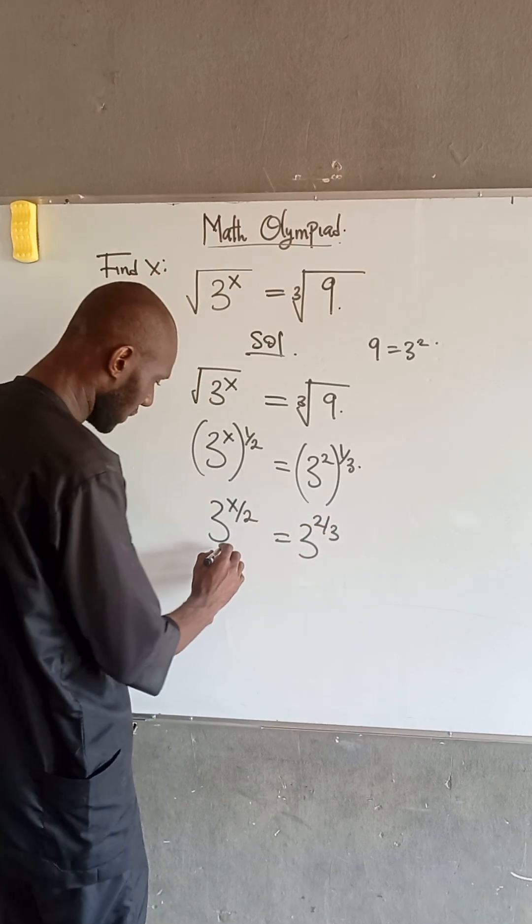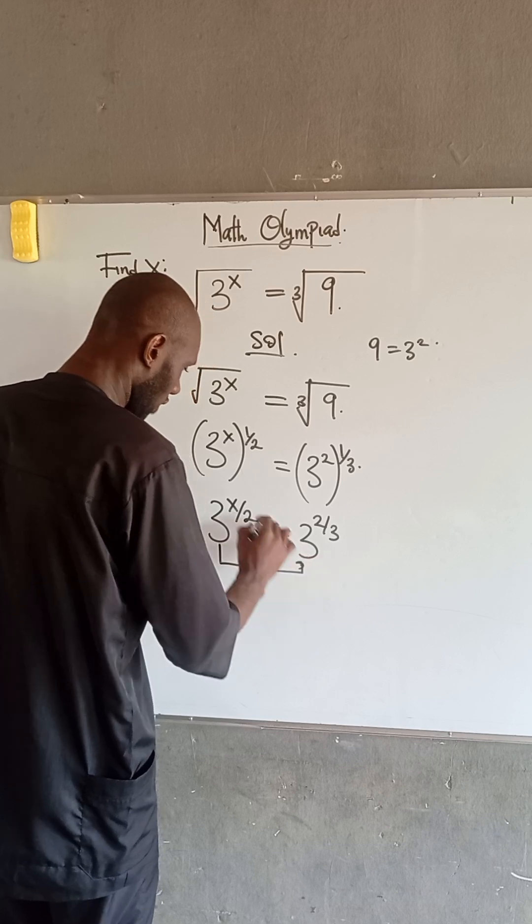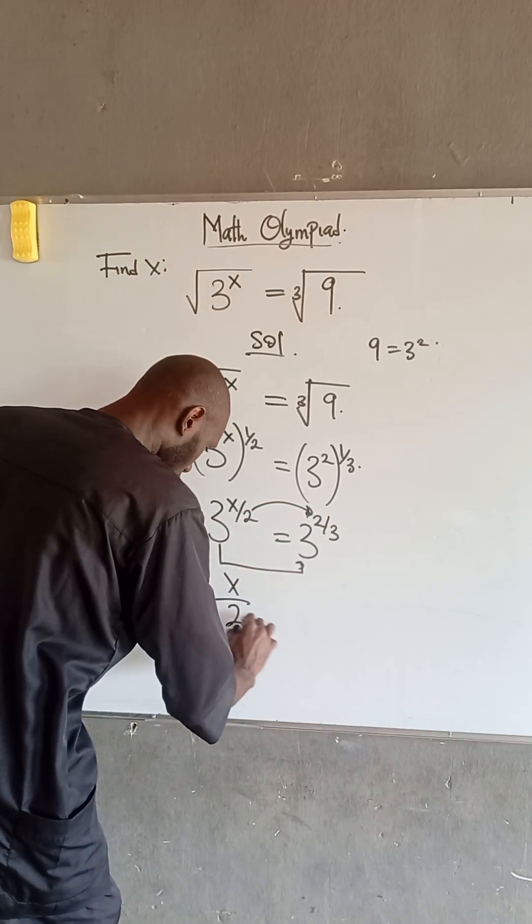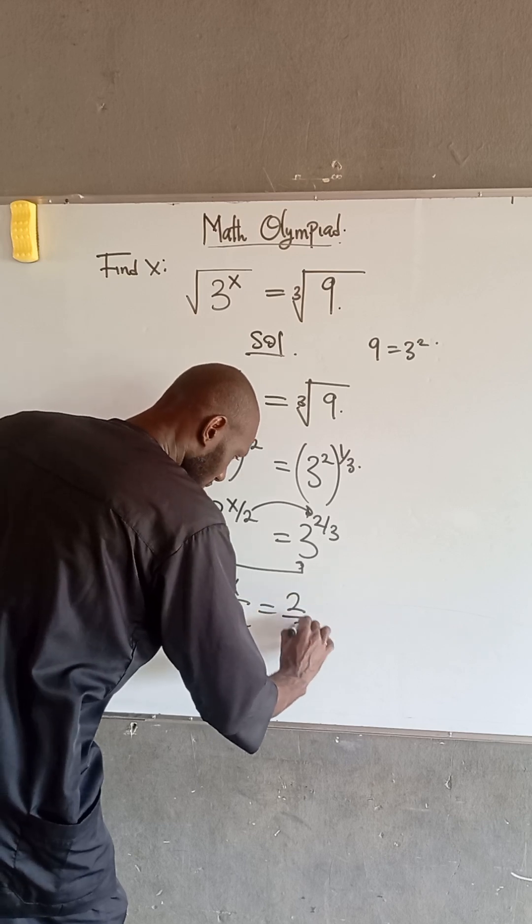Now, if you observe, their bases are the same. So therefore, we can equate their powers. We have that x divided by 2 is equal to 2 divided by 3.